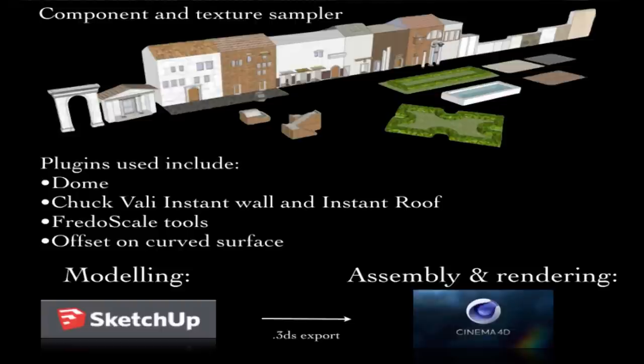The Fredo tools for scaling and stretching are useful. I just discovered offset on curved surface, which is lovely for all those curved vaulted ceilings in the bathhouse. I make all this in SketchUp and send it over to Cinema 4D, normally as 3DS files, assembling the city model there because C4D can handle something that big all at once.